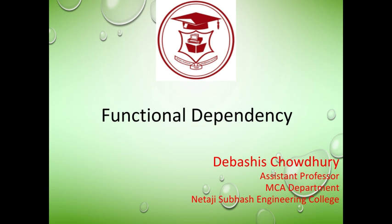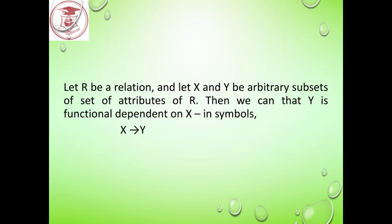In database management system, functional dependency is related to a given relation or table. Symbolically we can write X → Y, where X is the determinant attribute and Y is the dependent attribute. X → Y implies that if we choose any X value from a given relation, there must be a Y value within that relation for X → Y to be satisfied.